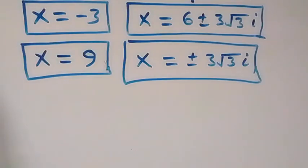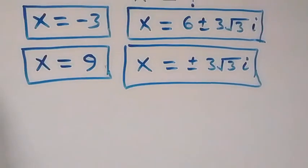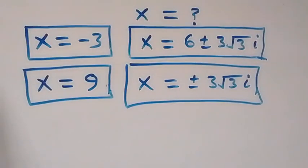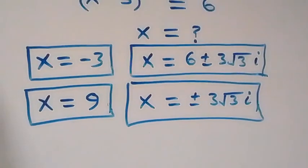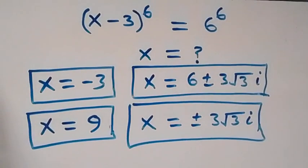Therefore we have a total of six solutions: x = −3, x = 9, x = 6 ± 3√3 i, and x = ±3√3 i. Thank you for watching — don't forget to subscribe for more videos, turn on your notification bell, share this video, give it a thumbs up. See you next class, bye for now.